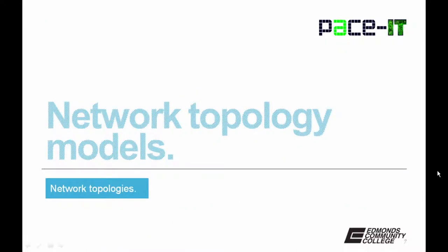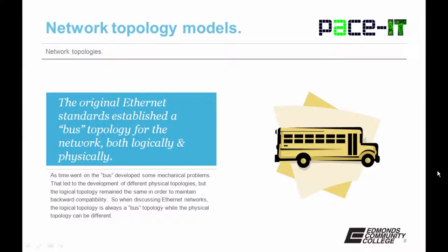Now let's move on to some common network topology models. The first is the bus. The original Ethernet standard established a bus topology for the network, both logically and physically. The signal traveled along a predetermined path from end to end. As time went on, the bus developed some mechanical problems, leading to different physical topologies, but the logical topology remained the same to maintain backward compatibility. So when we discuss Ethernet networks, the logical topology is always a bus topology, while the physical topology can differ.